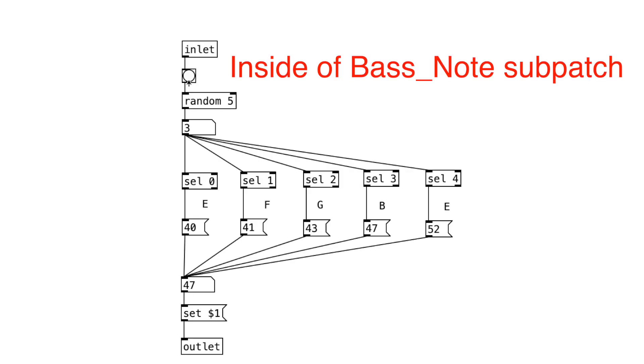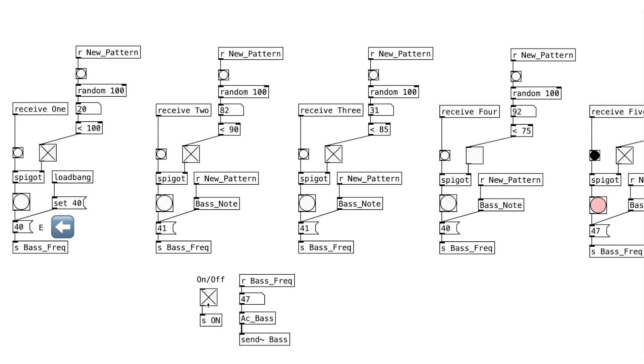We have a bass note subpatch here. This inlet receives a bang every four measures and triggers this random 5 object, and one of these notes will be chosen and sent out via the outlet object. I didn't put all of the notes from the Phrygian scale in order to keep the bass line simple. As you may have noticed, the first bass note will always be the root E. It doesn't need to be, but I typically like to have an anchor point that we can latch onto in these generative patterns. And we're using probability so that we have rhythmic variation in these patterns.